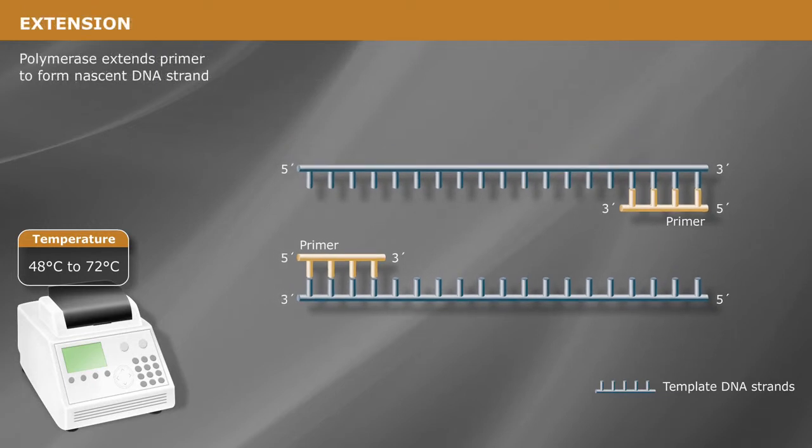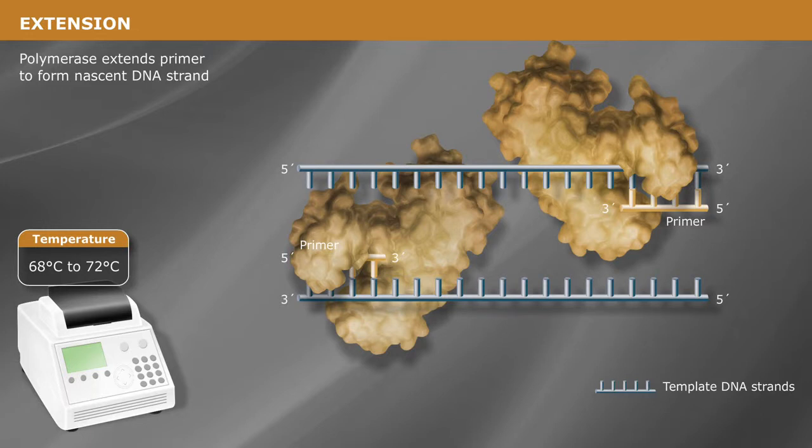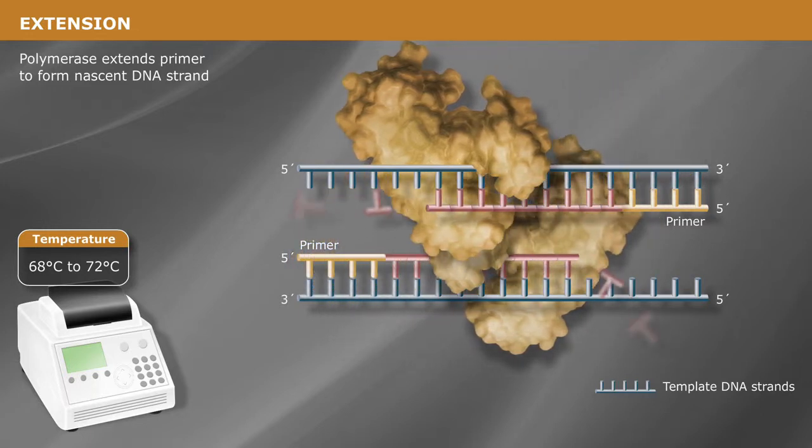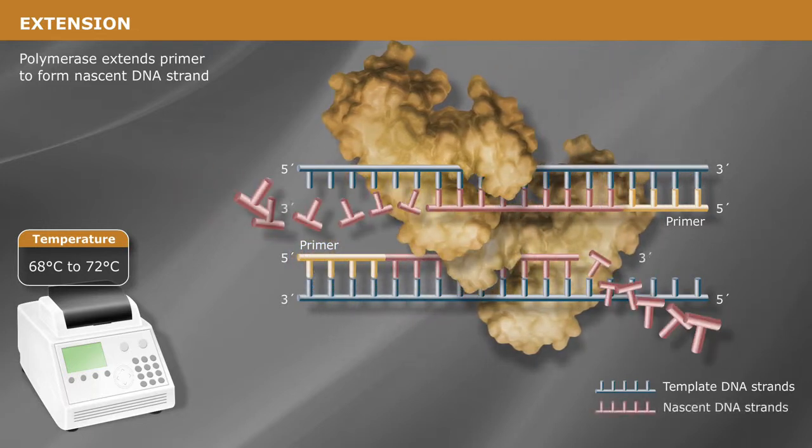During the third step of PCR, the temperature is raised slightly, and the DNA polymerase extends the primer template duplex by adding the complementary nucleotides one by one to the nascent DNA strand.